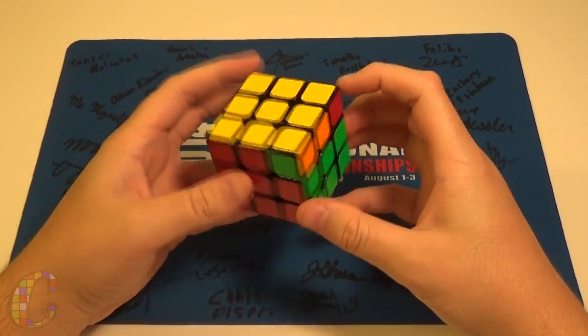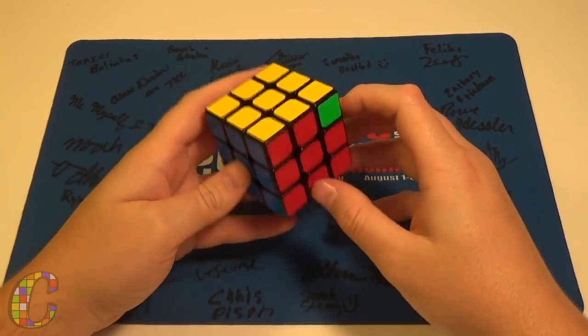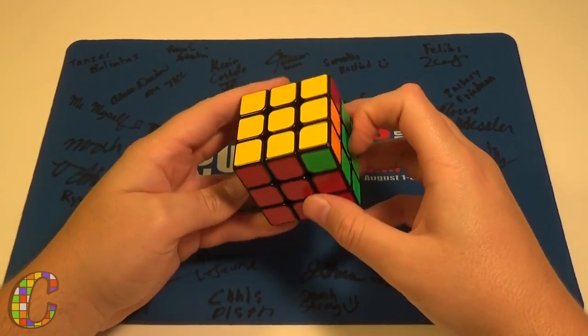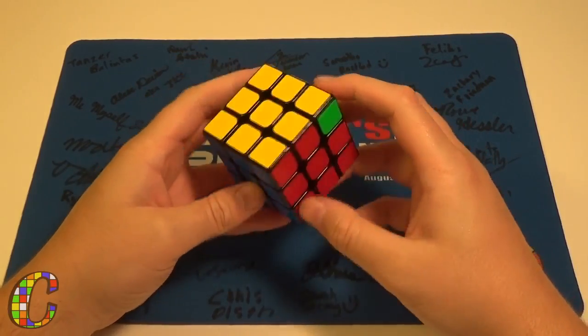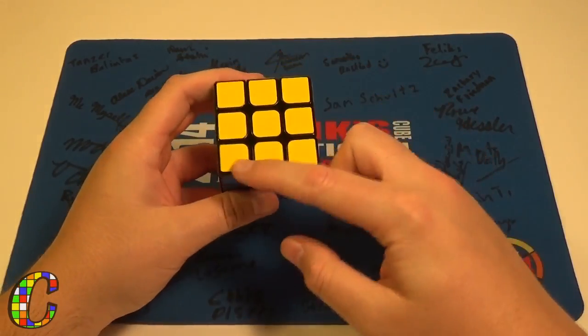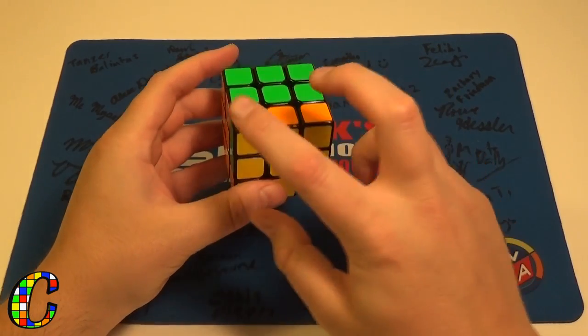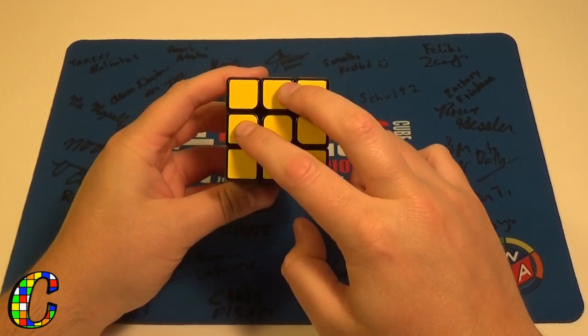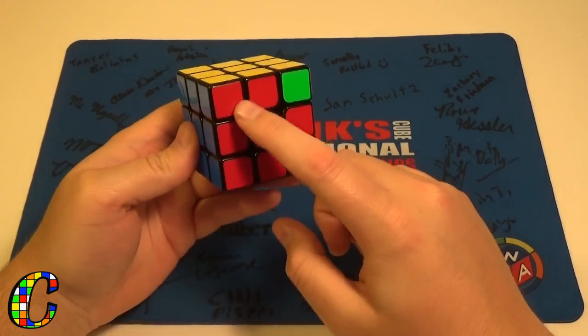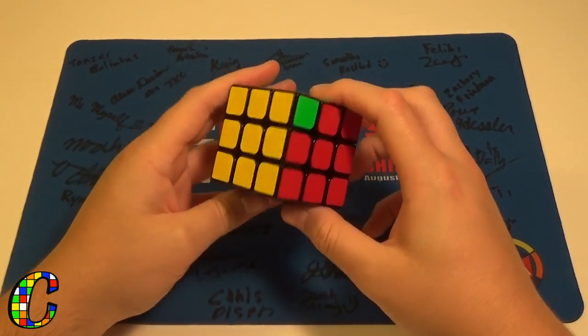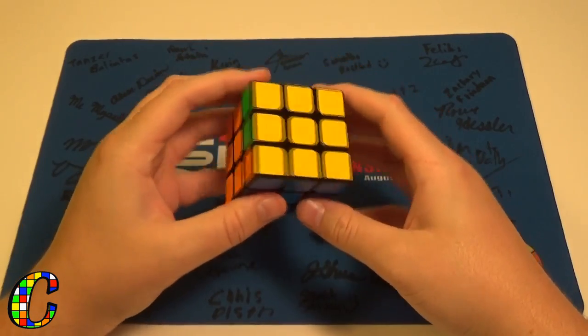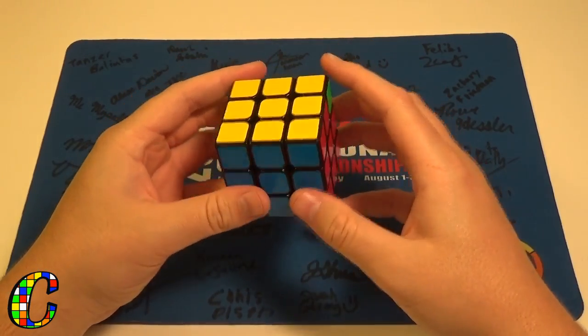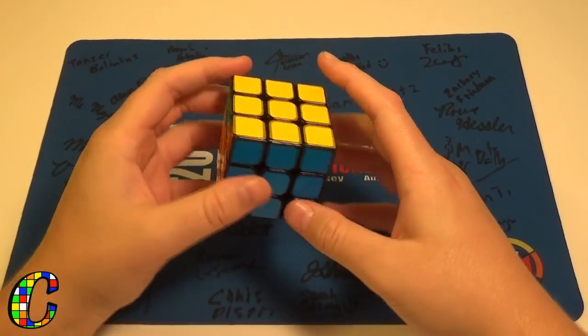So as you can tell by the title and the intro, what we're going to be covering today is the Sexy J perm. All that is is an alternative algorithm to the J-A permutation, the one where you switch these two corners and these two edges, and you have this 3x1 bar in front and 2x1 bar on the side. A lot of you probably already know about this, but for those who don't, I think it's really interesting and I really like the finger tricks.